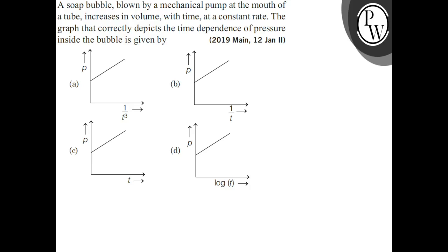A soap bubble blown by a mechanical pump at the mouth of a tube increases in volume with time at a constant rate. The graph that correctly depicts the time dependence of pressure inside the bubble is given by.